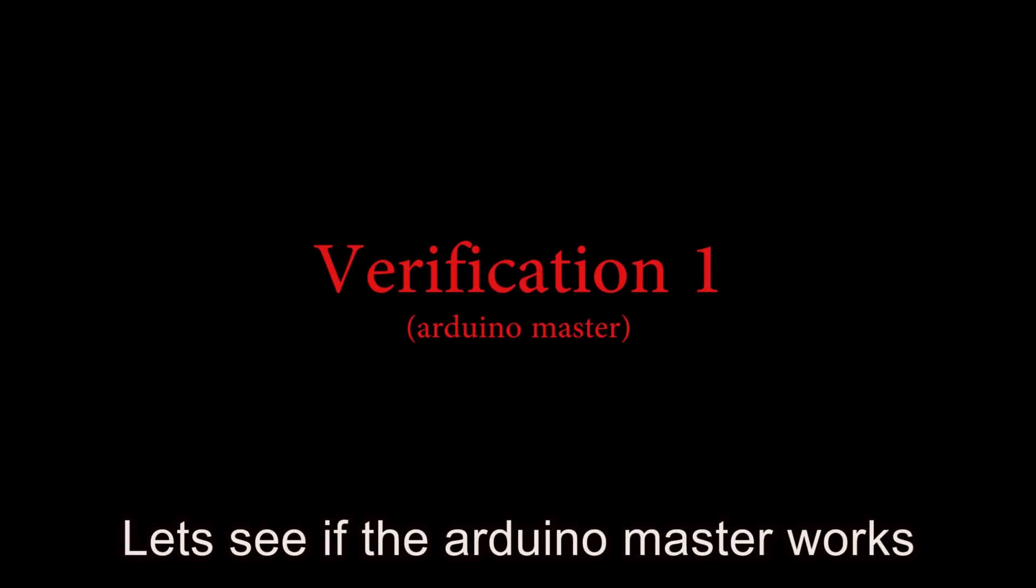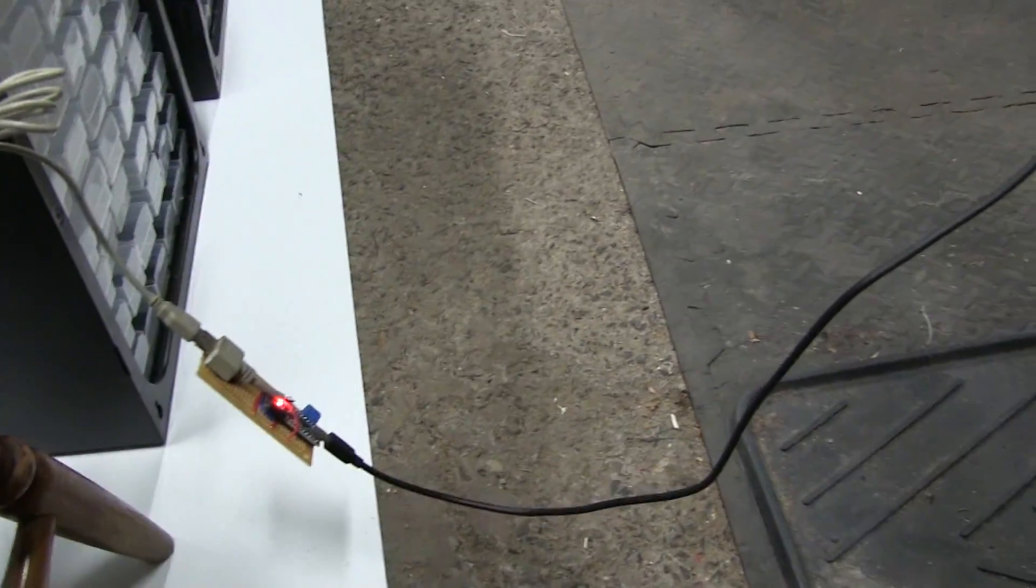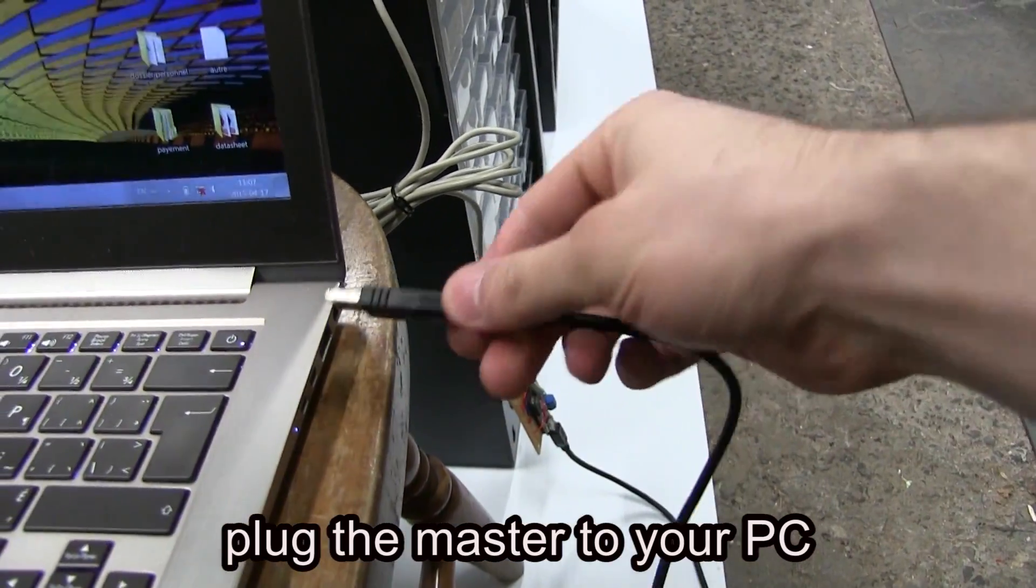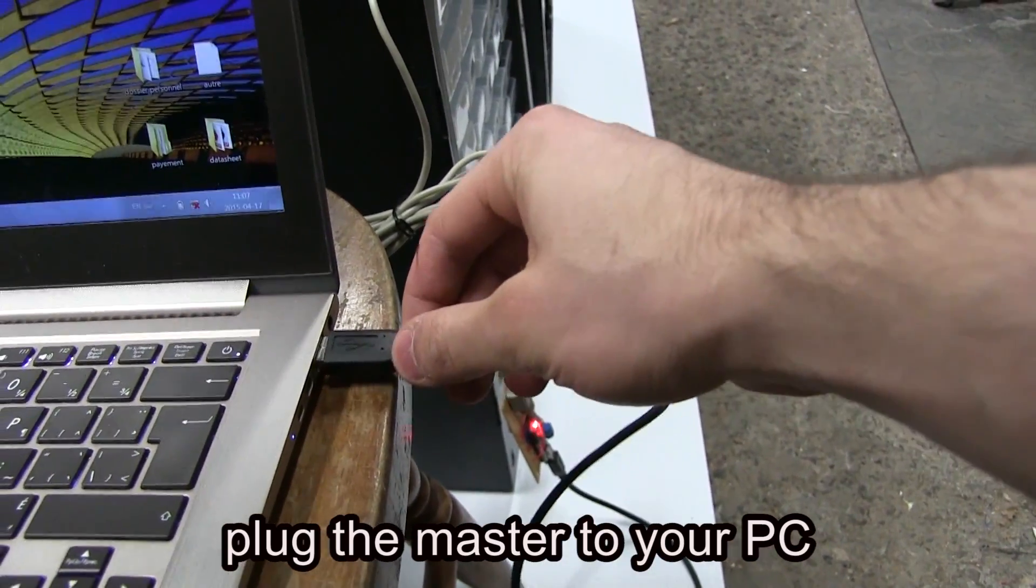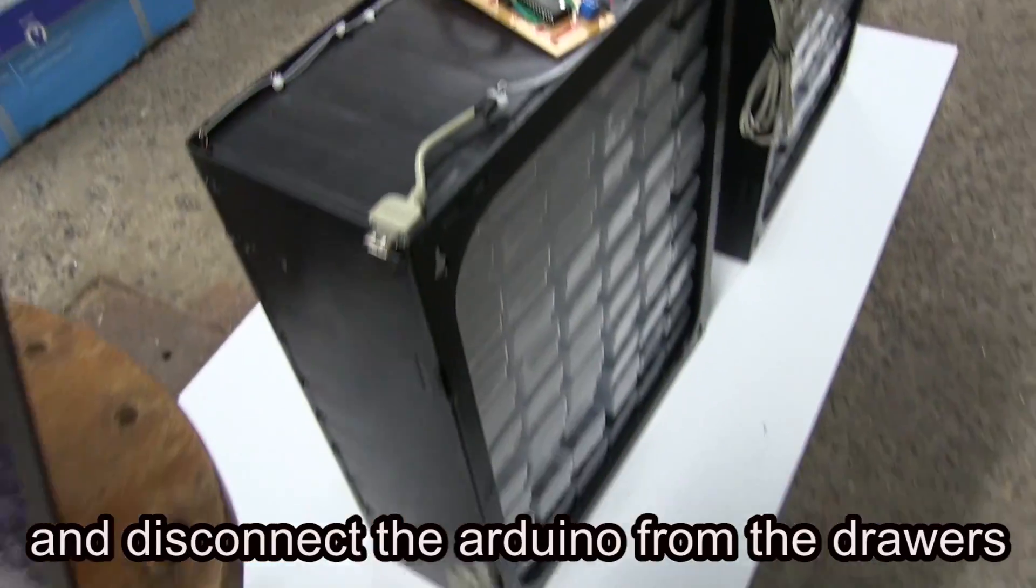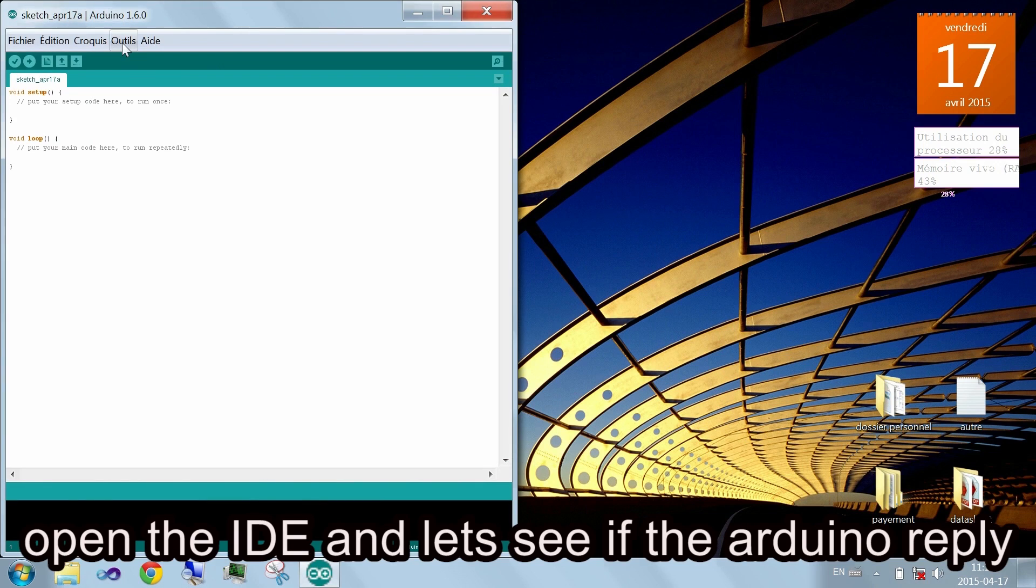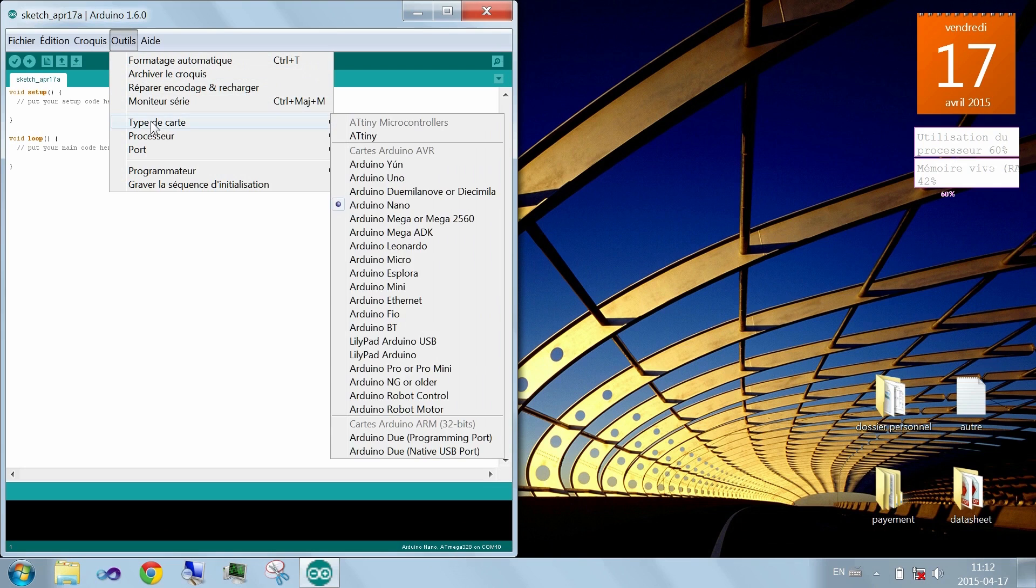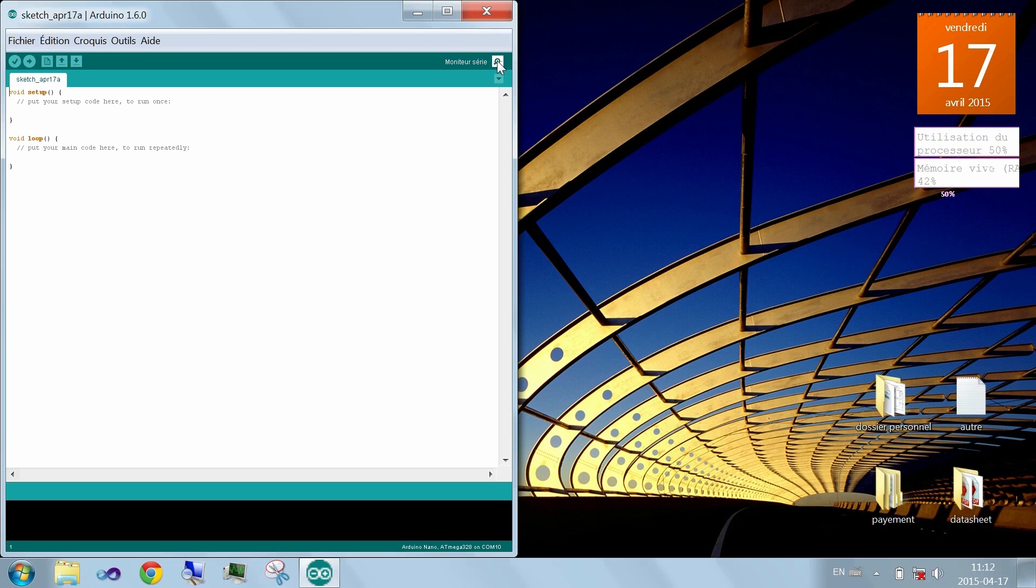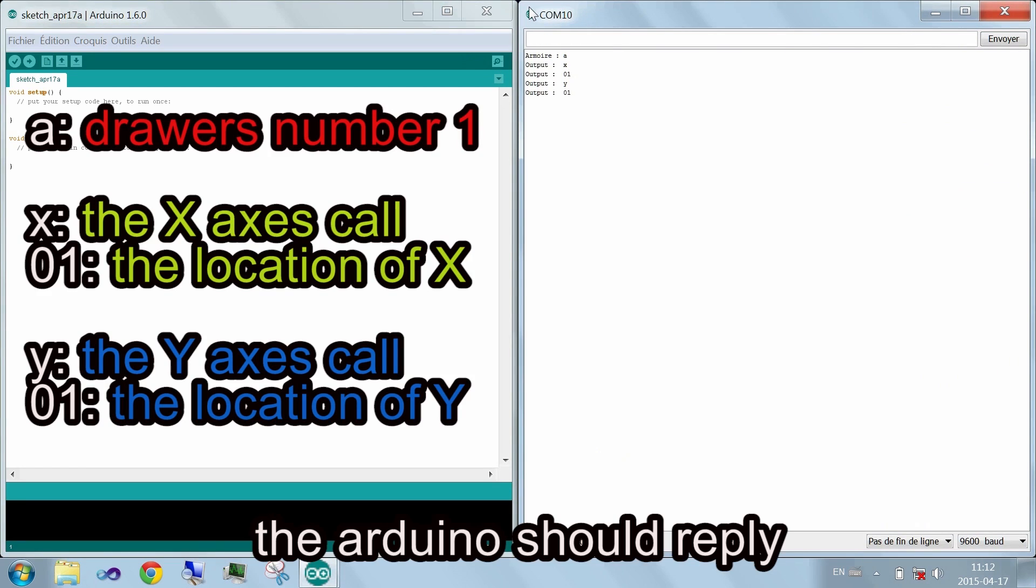Let's see if the Arduino master works. Remove the Bluetooth module and plug the master to your PC. Disconnect the Arduino from the drawers. Open the Arduino's interface and let's see if the Arduino replies. The Arduino should reply.